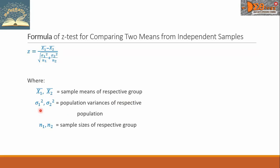Sigma sub one squared and sigma sub two squared are the population variances of respective populations. N sub one and N sub two are sample sizes of respective groups.